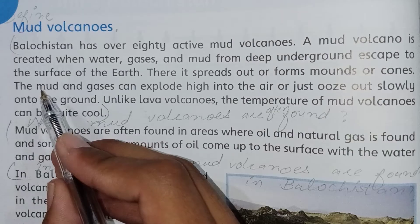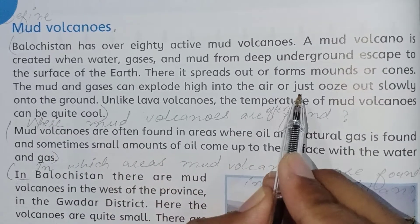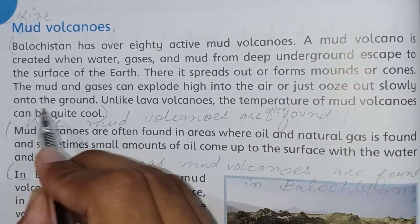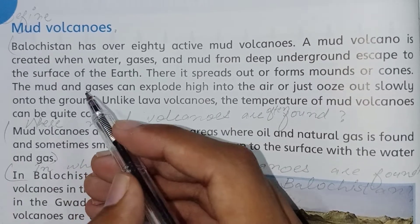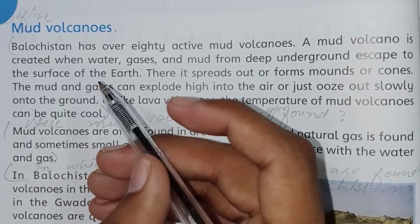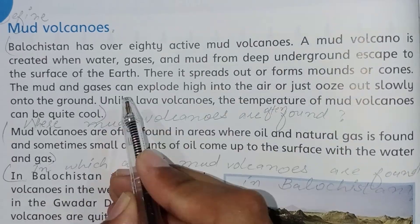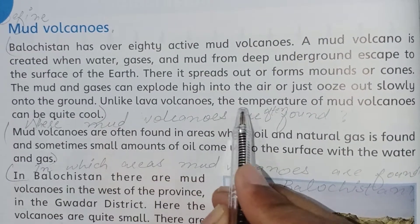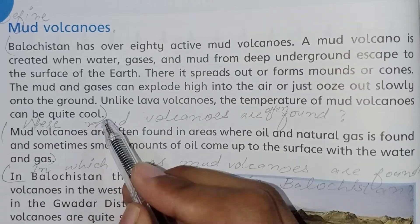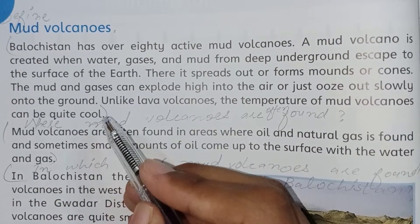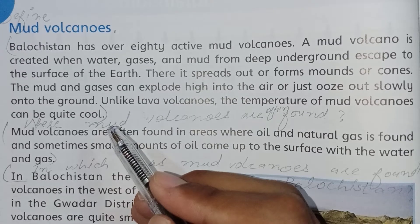The mud and gases can explode high into the air or just ooze out slowly onto the ground. Unlike lava volcanoes, the temperature of mud volcanoes can be quite cold. Here we can say that the temperature of mud volcanoes can be quite cold rather than lava volcanoes.